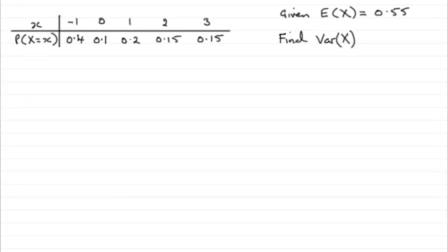Now for this next part, I filled in the table that we were given with the values of p and q that we found earlier, 0.4 and 0.1 respectively. Remember we're given that E of x was 0.55 and so we've got to find the variance of x.